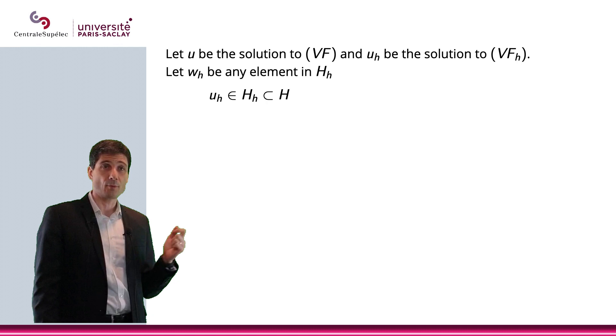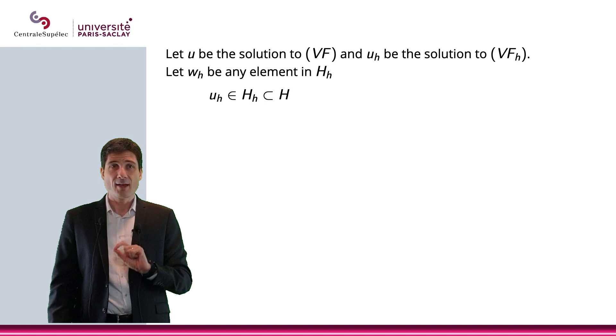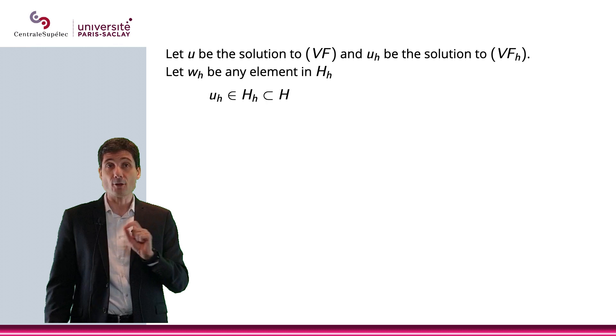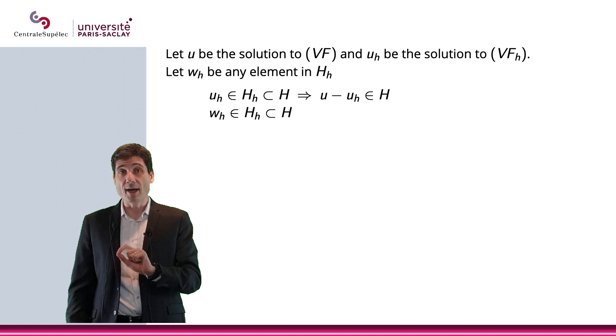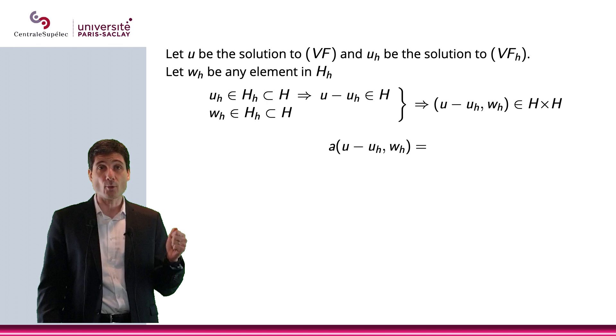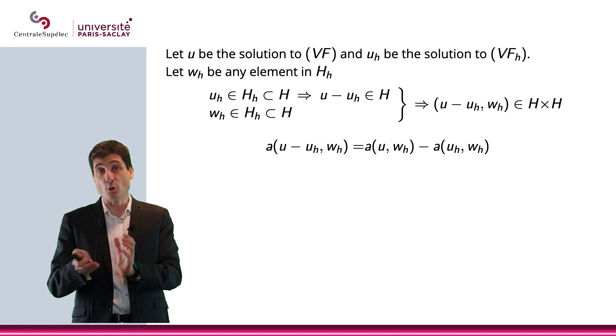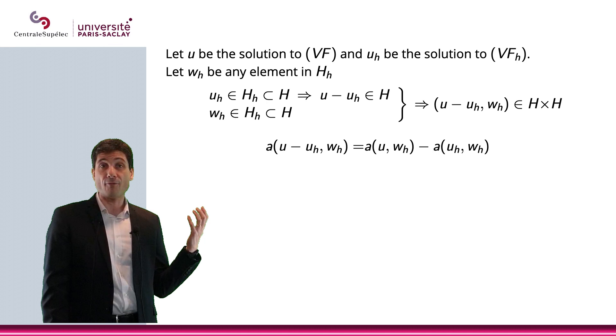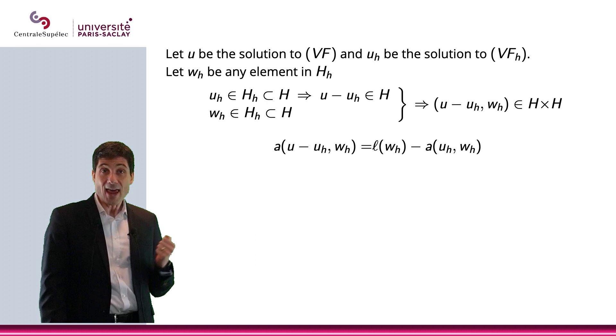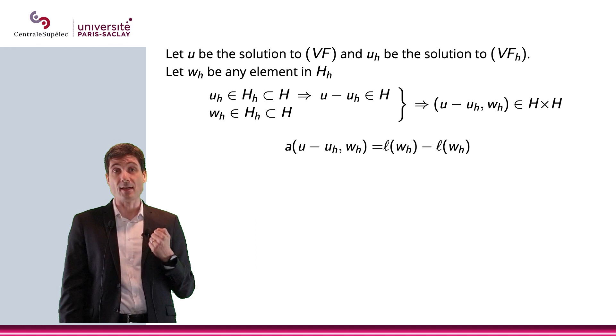Let me start with remarking that for any wₕ, an element of Hₕ, then here's what I have. uₕ is in H, so u - uₕ is in H, and wₕ is in H, so u - uₕ, wₕ will be in H × H. So, I can apply a. And if I apply a to u - uₕ, wₕ, well, obviously what I will get is a(u, wₕ) - a(uₕ, wₕ). But because of (VF), the variational formulation, a(u, wₕ) will be ℓ(wₕ). And because of (VFₕ), a(uₕ, wₕ) will also be ℓ(wₕ). In other words, what I will have is that a(u - uₕ, wₕ) is zero.